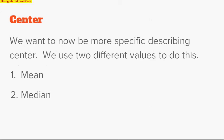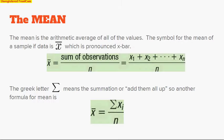Now we want to talk about center. We're going to talk about two specific ways to talk about center in this video: mean and median. Let's talk about the mean first. The mean is the arithmetic average of all the values. The symbol for the mean of a sample of data is x-bar. So x-bar is the sample mean. How do you find that? You simply add up all of your observations and then divide by your total sample size, which we call n.